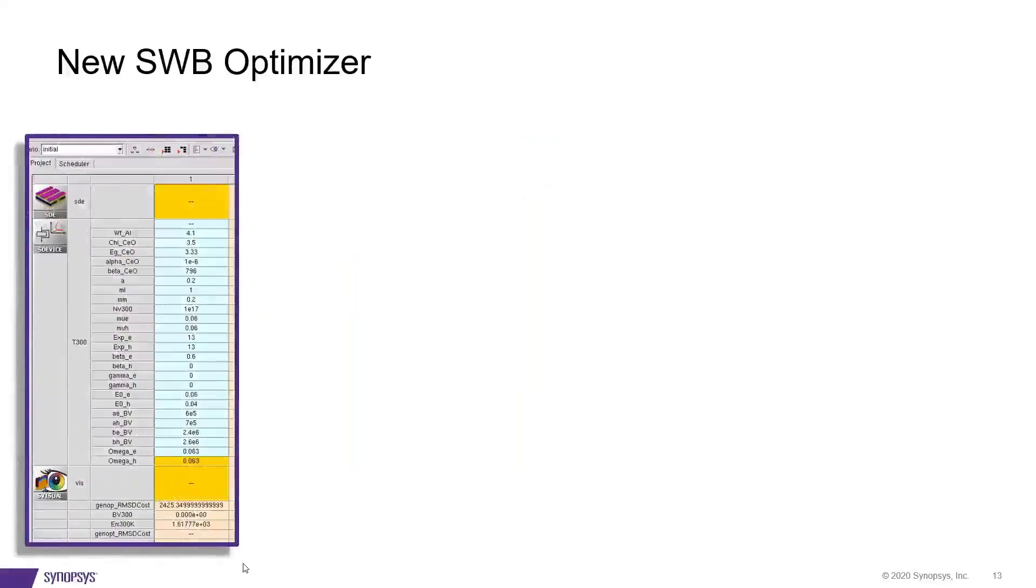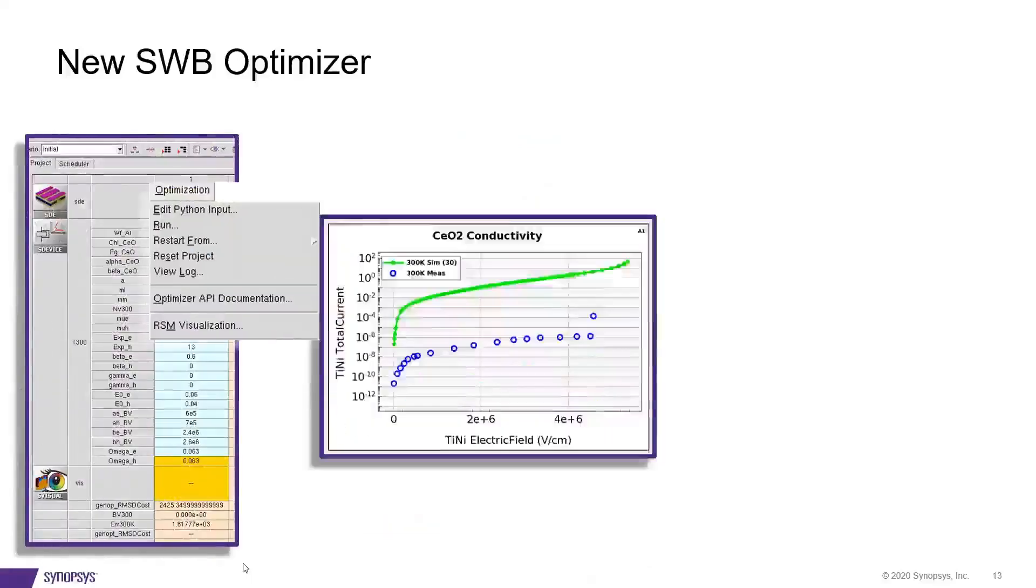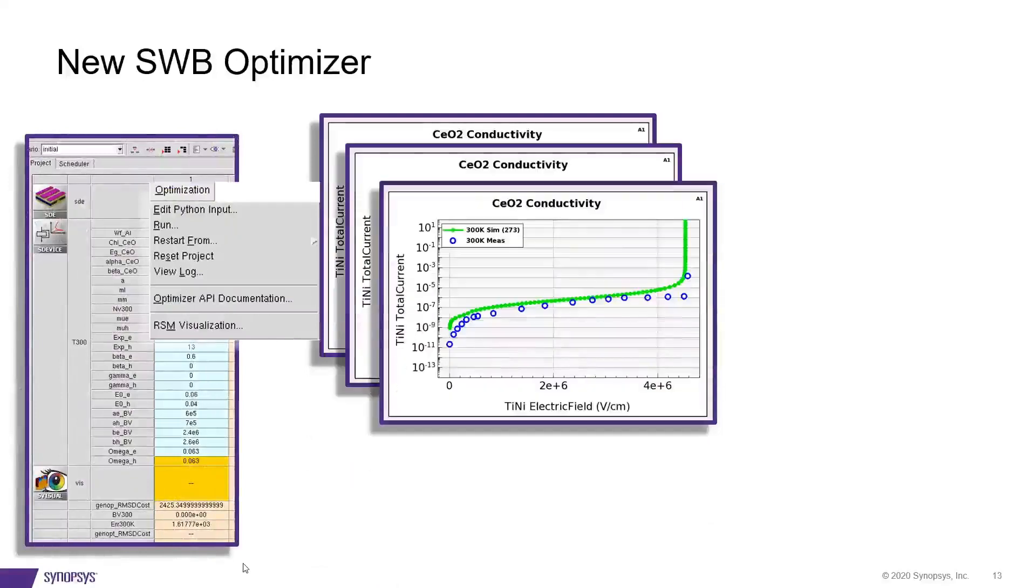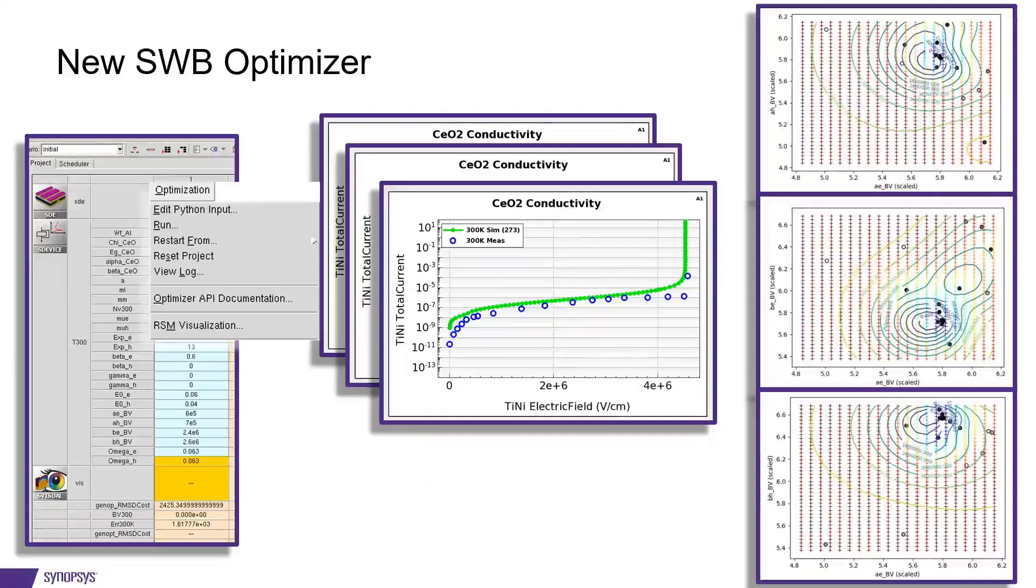New SWB Optimizer. Take any SWB project, pick any set of parameters in the tool flow, define your targets, and you're ready to go for your optimization.